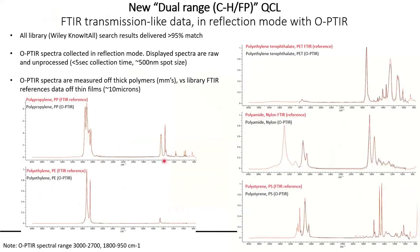To show how OPTIR spectra compare to reference FTIR, here is new data collected on a new QCL including the CH range together with the fingerprint. In red are FTIR reference spectra and in black are OPTIR spectra for five different polymers including polystyrene. The spectra are an almost perfect match — the FTIR collected from thin films in transmission, and OPTIR collected off thick blocks of the same polymer material in reflection mode.